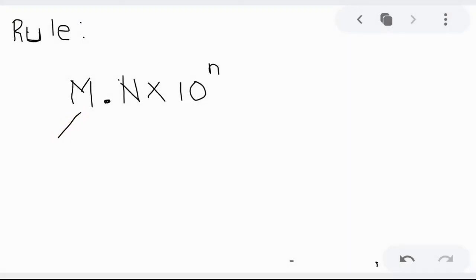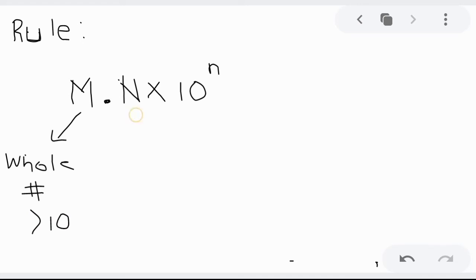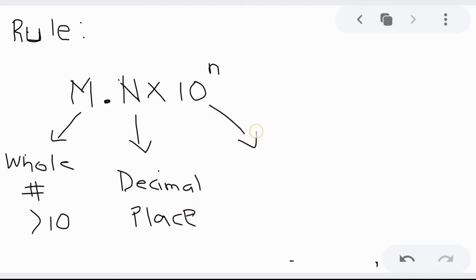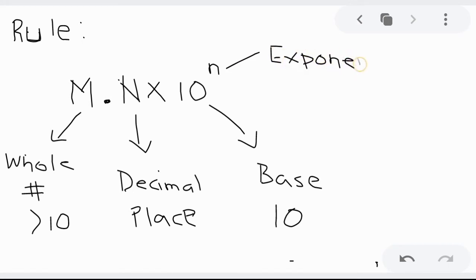Here is the rule. We have capital M.N times 10 raised to N, where capital M represents the whole number. Remember that the whole number should always be less than 10. The decimal place is capital N, and 10 represents the base — it is very essential in exponential notation. And N is the exponent. This rule is very important in scientific notation.